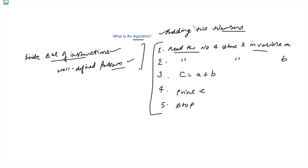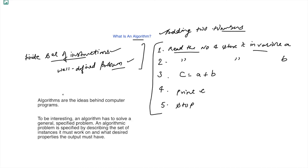Algorithms are the ideas behind computer programs. We have an idea — here, adding two numbers, storing the result in a new variable, and printing it. Before solving any problem, we should have an idea of how to solve it and produce some output.